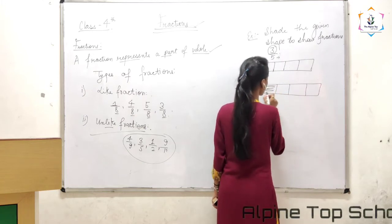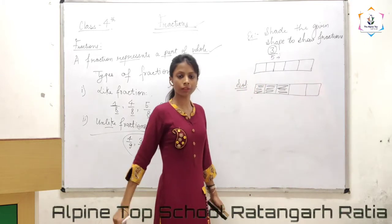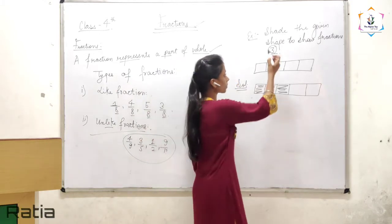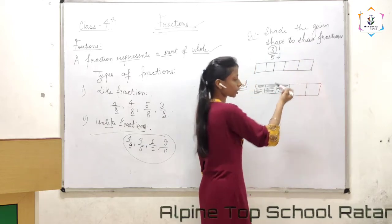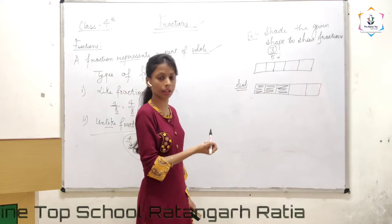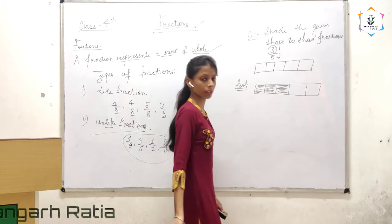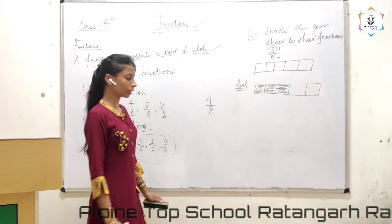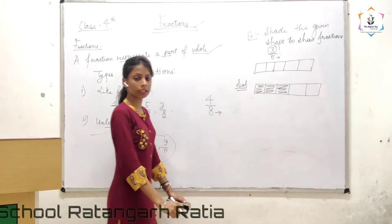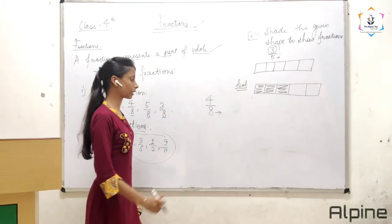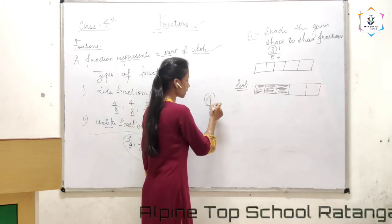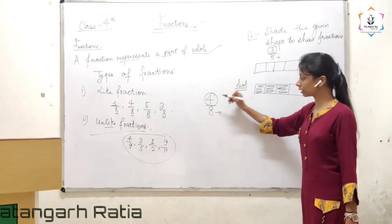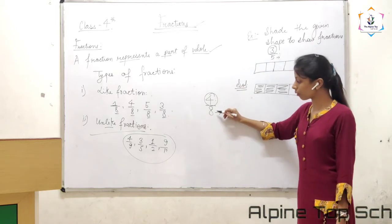Now this numerator number tells us how many parts we have to shade. So this 3 means we have to shade 3 parts — 1, 2, and 3. The denominator value tells the total parts of anything, and the numerator value tells the part of a whole. This numerator value tells the part of a whole.